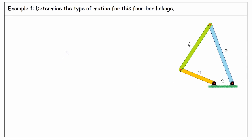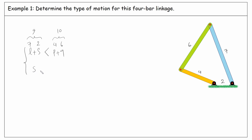Now, after this review, let's start with a simple example where the lengths for all the links have been given and the type of motion has been asked. If we compare L plus S and P plus Q, the longest link is 7 unit length, the shortest is 2, and the two others are 4 and 6. 7 plus 2 is 9, and 4 plus 6 is 10, so L plus S is less than P plus Q. And since the shortest link is the base, the type of motion becomes crank-crank.